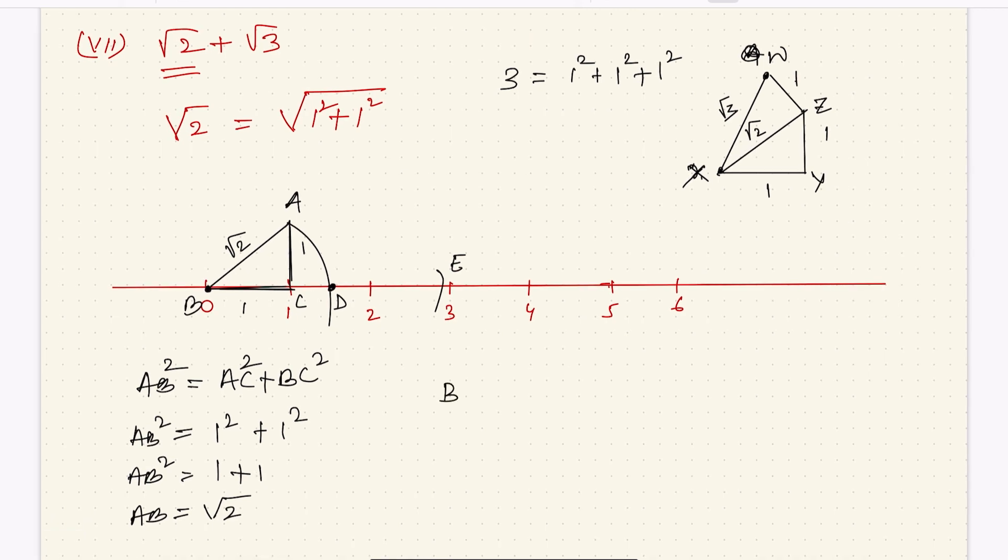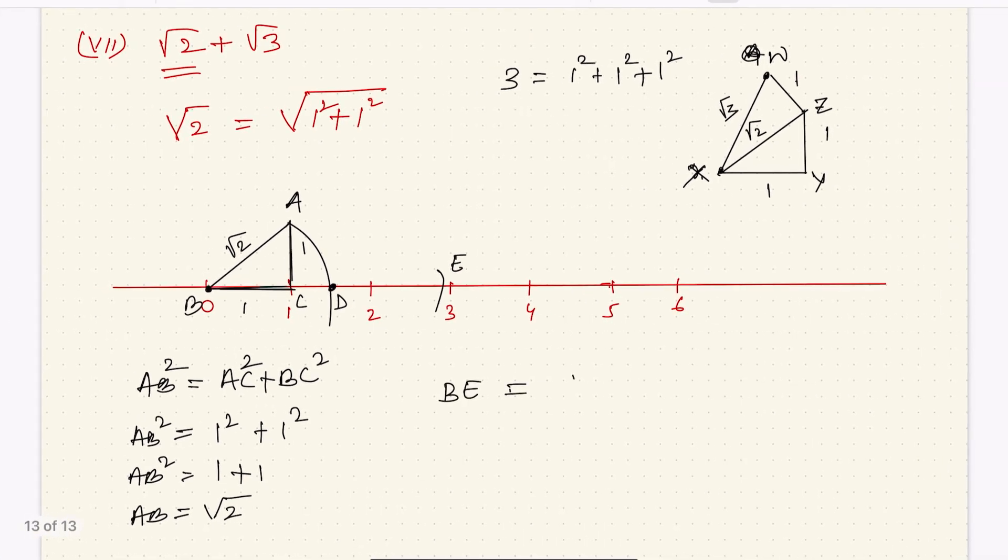Now, BE you can conclude is equal to how much? BD plus DE. BD is how much? BA, which is root 2. Plus DE, which is XW, which is root 3. You got root 2 plus root 3, and done. So E represents root 2 plus root 3.